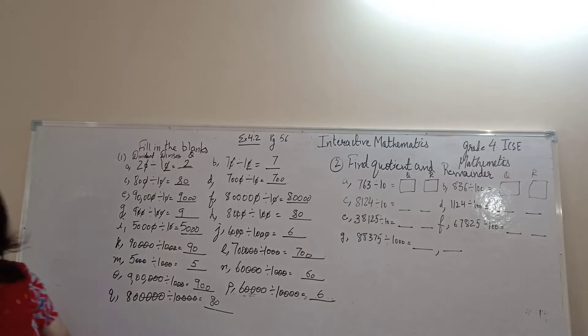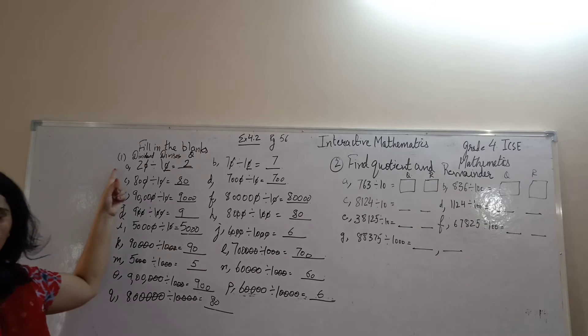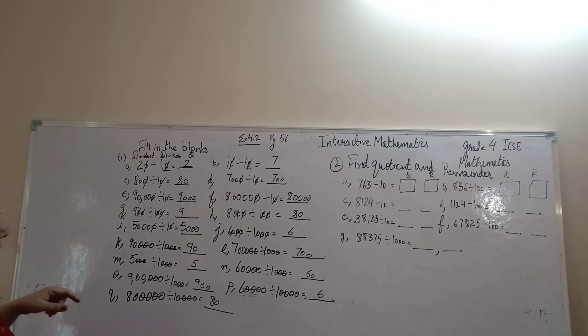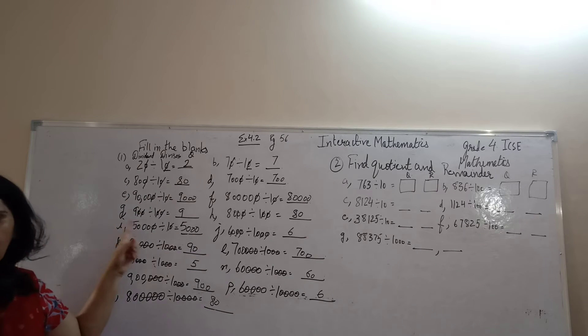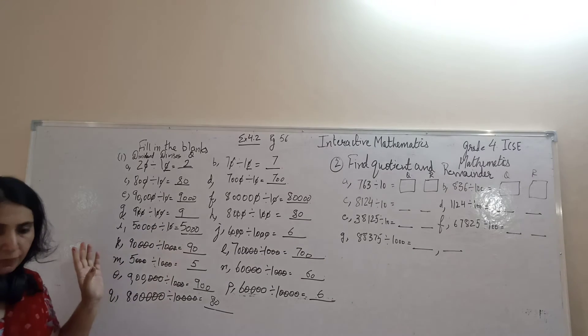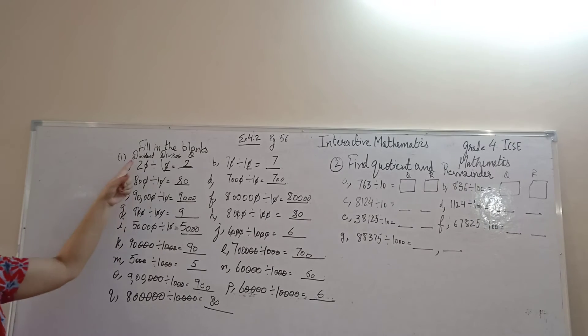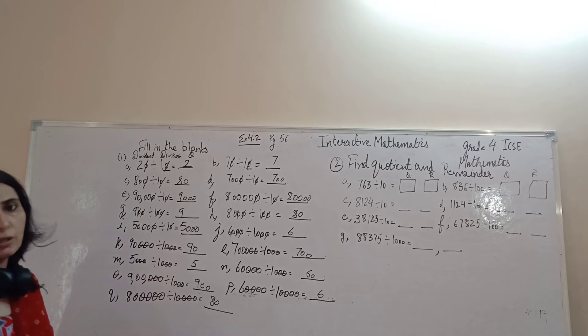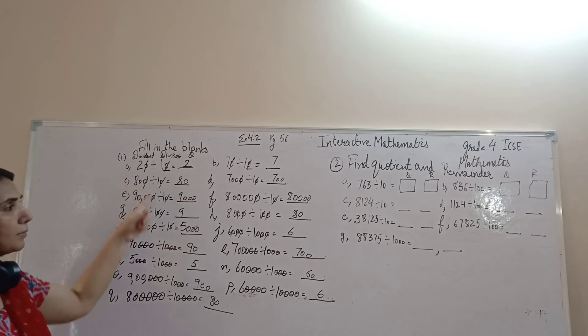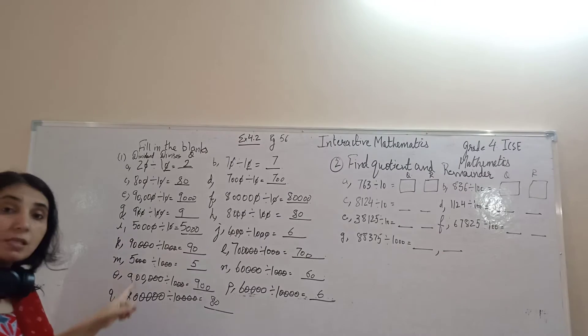This was answer 1 of your 4.2, where we were dividing the number by 10, 100 and 1000. One thing, in this sum, your dividend was multiple of 10, 100 or 1000. Like all the numbers were ending with 0.